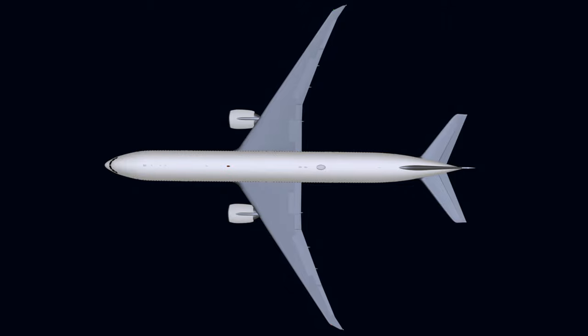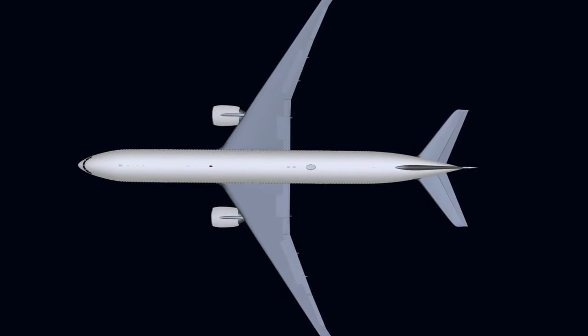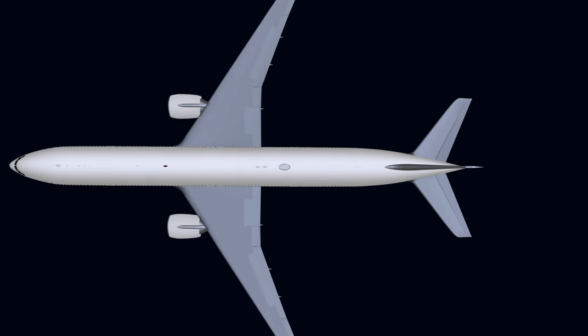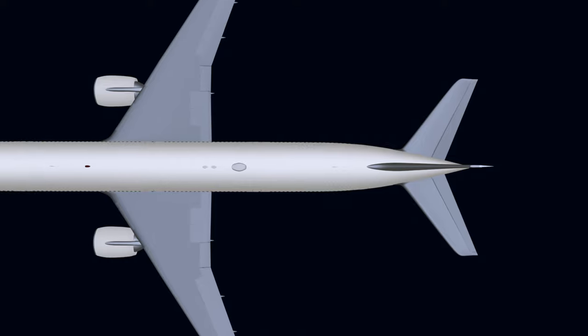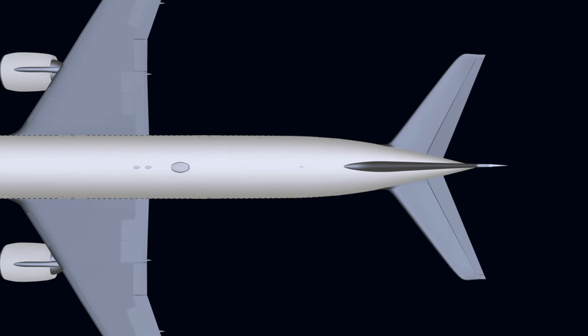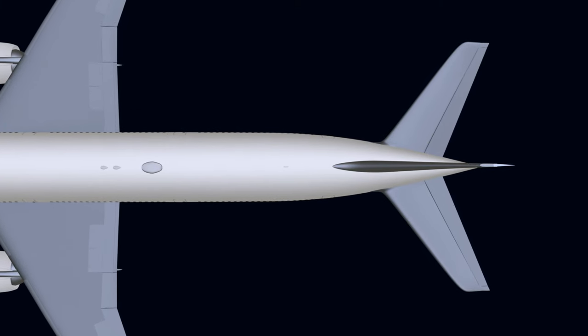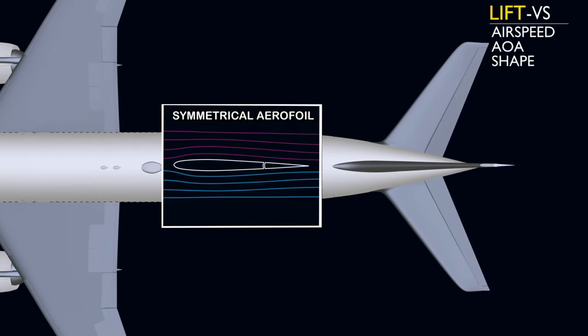In the penultimate chapter of the flight control series, we will understand the roll control features of the aircraft. Previously, we understood that the lift on the vertical stabilizer depends on three factors: airspeed, angle of attack, and effective shape.